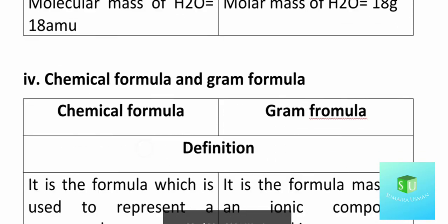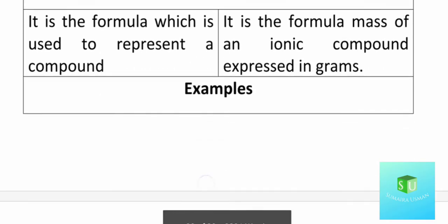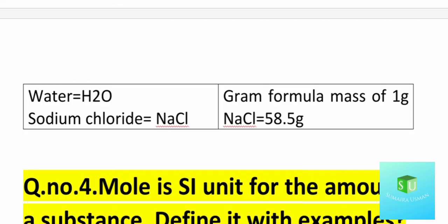The fourth part is chemical formula and gram formula. A chemical formula is a formula that represents a compound. A gram formula is the formula mass of an ionic compound expressed in grams. For example, water's chemical formula is H₂O; sodium chloride's chemical formula is NaCl. The gram formula mass of NaCl: Na is 23 and Cl is 35.5, so together they add up to 58.5 grams.